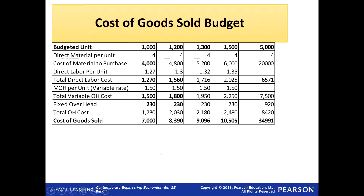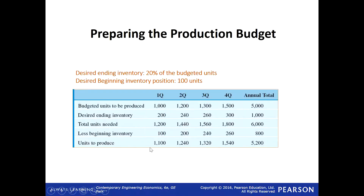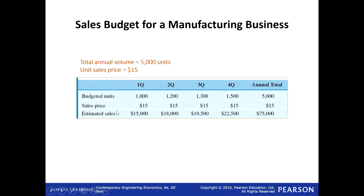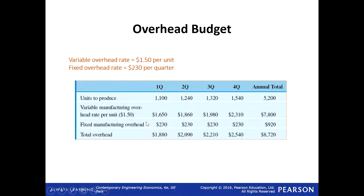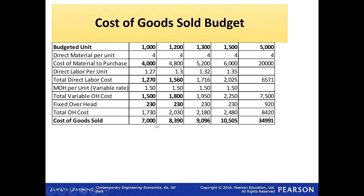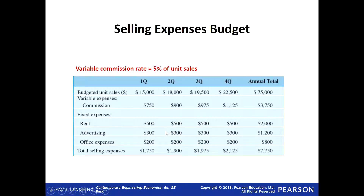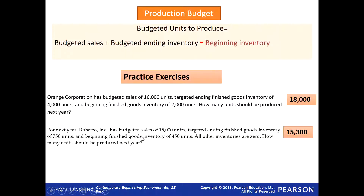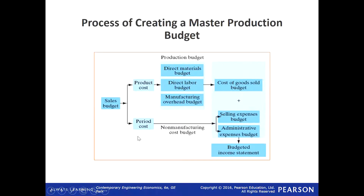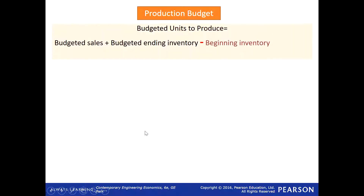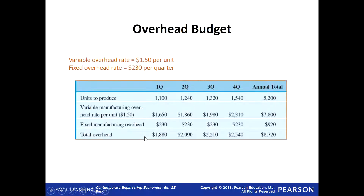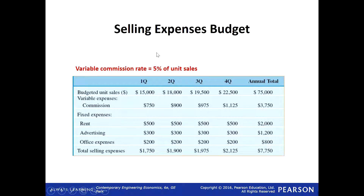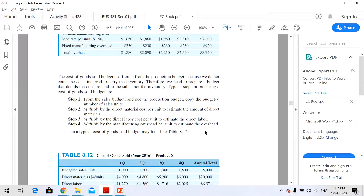Now we can prepare our budgeted income statement: sales minus cost of goods sold. Sales we already know from the sales budget. For the first quarter, sales is $15,000 minus $7,000. Now we already know sales and cost of goods sold. Then we look at our period costs for this question: selling expense and admin budget.